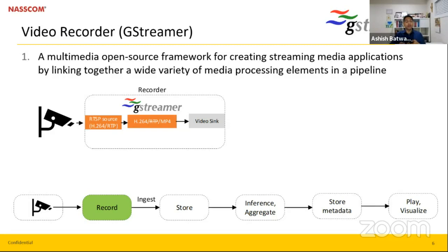GStreamer can also be used to transcode a media file, converting from one format to another. It supports all major operating systems such as Linux, Windows, Mac OS, Android, and iOS. It supports major hardware architectures including x86, MIPS, ARM, PowerPC, and SPARC. GStreamer applications can be written in several languages such as Python, C, C++, Rust, Java, and many more.